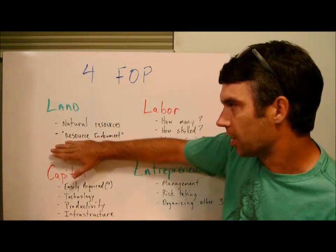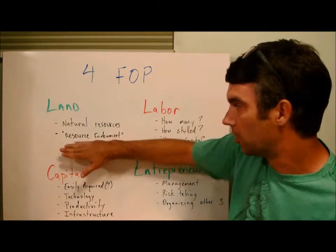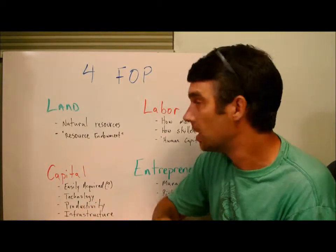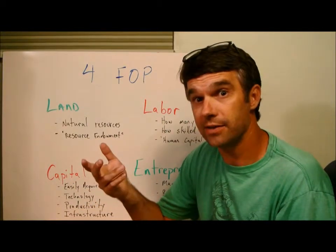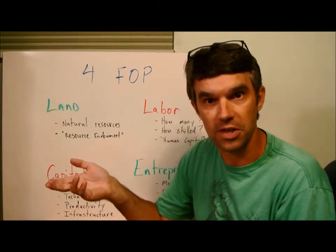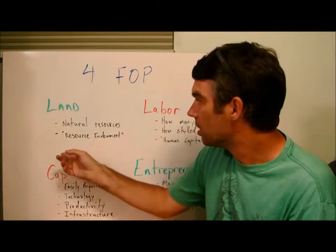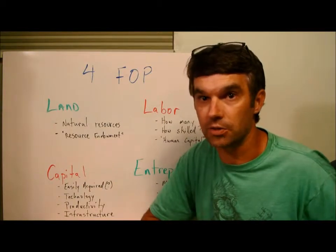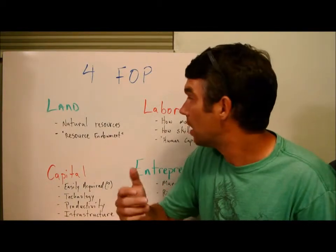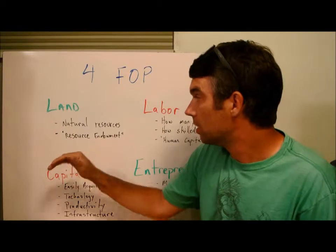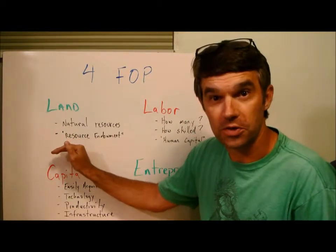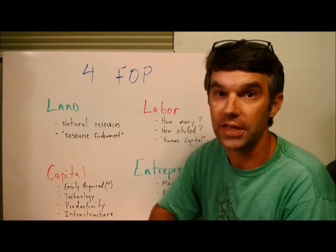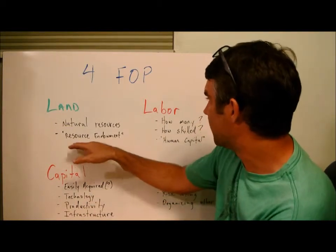Different countries are given different natural resources — we call it a resource endowment. An endowment is just a gift; often times when someone dies they leave an endowment to a university or something like that. So obviously some countries have better natural resources than other countries — it's just a fact of life. Sometimes you have a resource that isn't very important at all, and then all of a sudden it becomes important, like oil about 150 years ago.